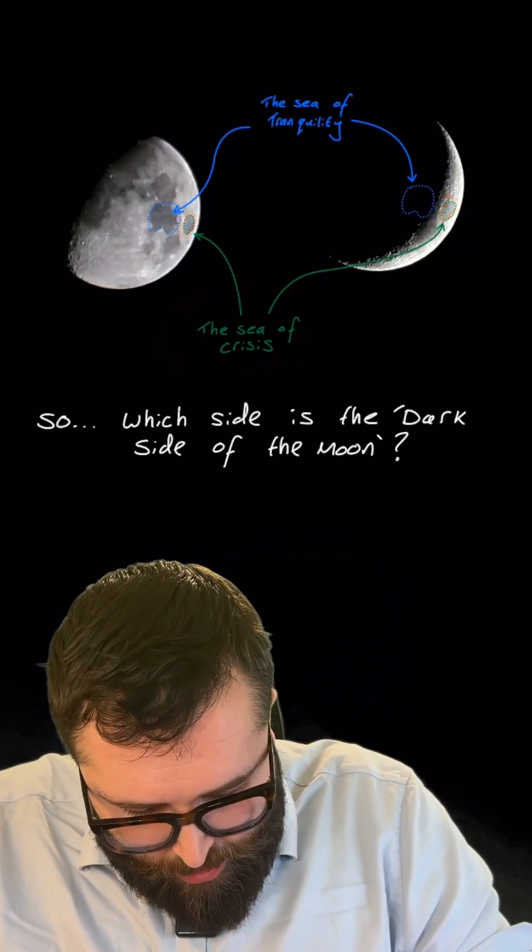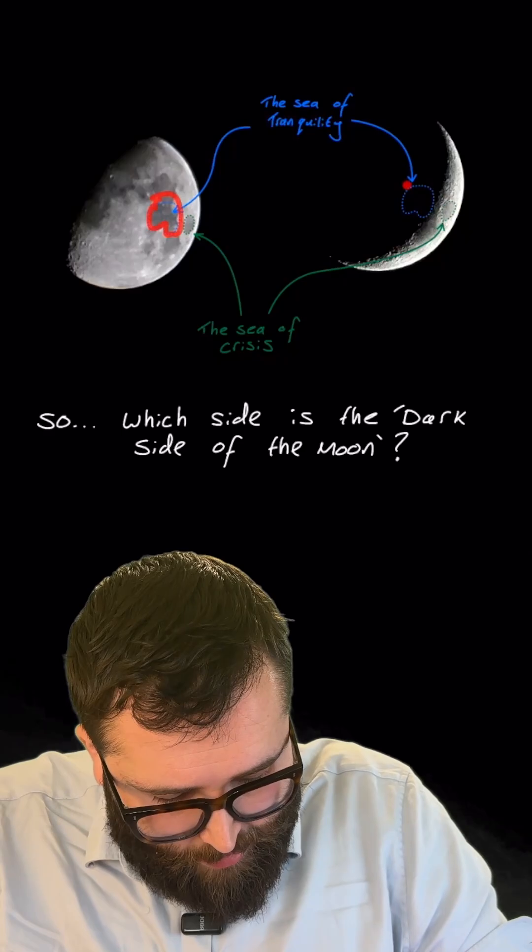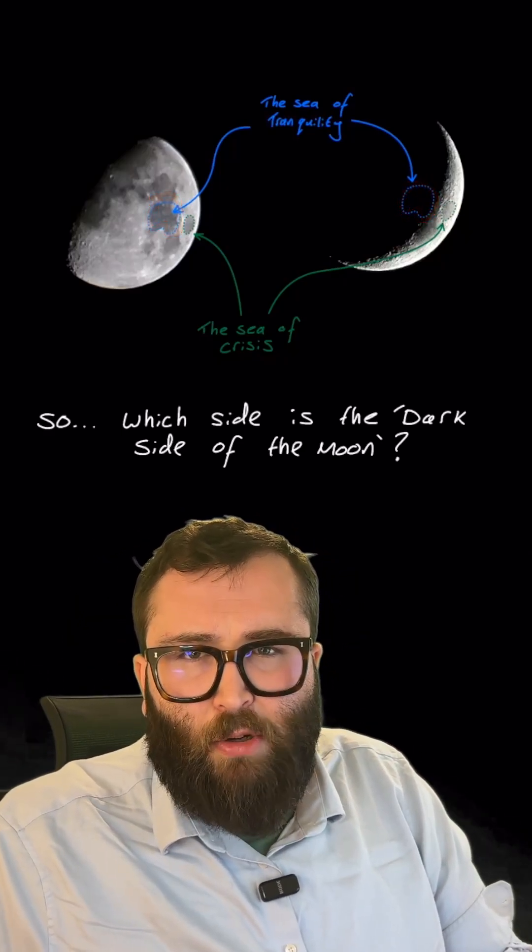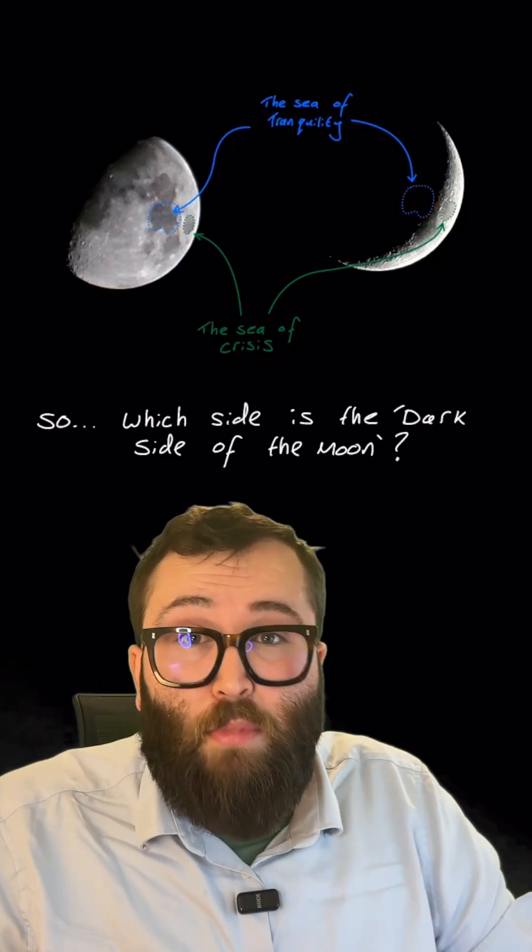However, in one picture the sea of tranquility is in the light but in the other the sea of tranquility is completely dark. So that kind of begs the question: which side of the moon is the dark side of the moon?